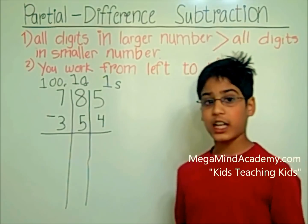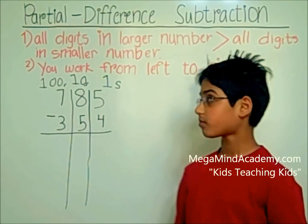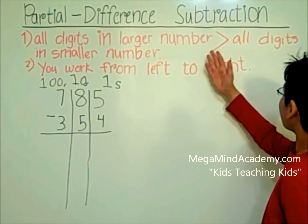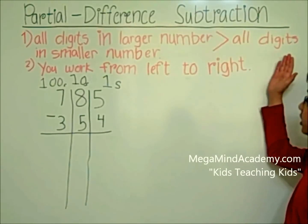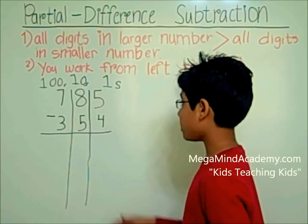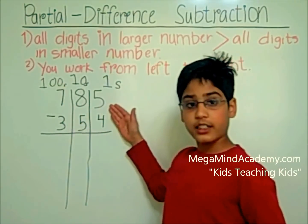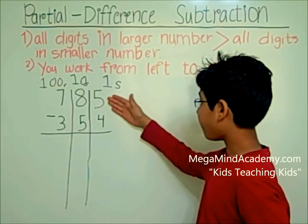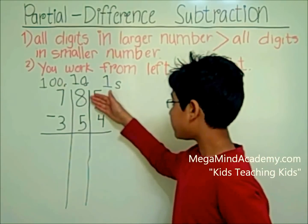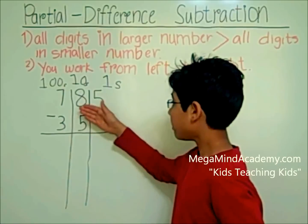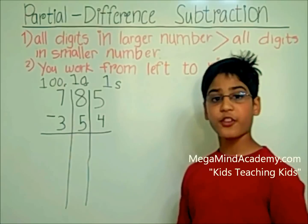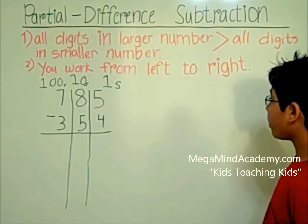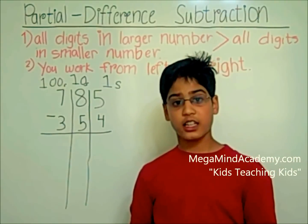Now let's find out if this example fits all the conditions. The first condition is that all digits in the larger number are greater than all digits in the smaller number. The larger number is 785 and the smaller number is 354. Is 5 greater than 4? Yes. Is 8 greater than 5? Yes. Is 7 greater than 3? Yes. So the first condition is true. The second condition is that you have to work from left to right — let's start.